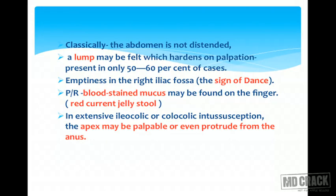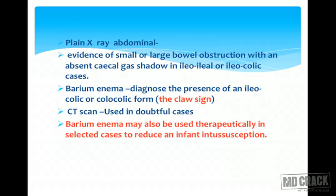Blood-stained mucus is also known as red currant jelly stool. In extensive ileocolic or colocolic intussusception, the apex may be palpable or even protrude from the anus. Plain X-ray abdomen reveals evidence of small or large bowel obstruction with an absent cecal gas shadow. Barium enema diagnoses the ileocolic or colocolic form, and it is called the claw sign. CT scan is used in doubtful cases.